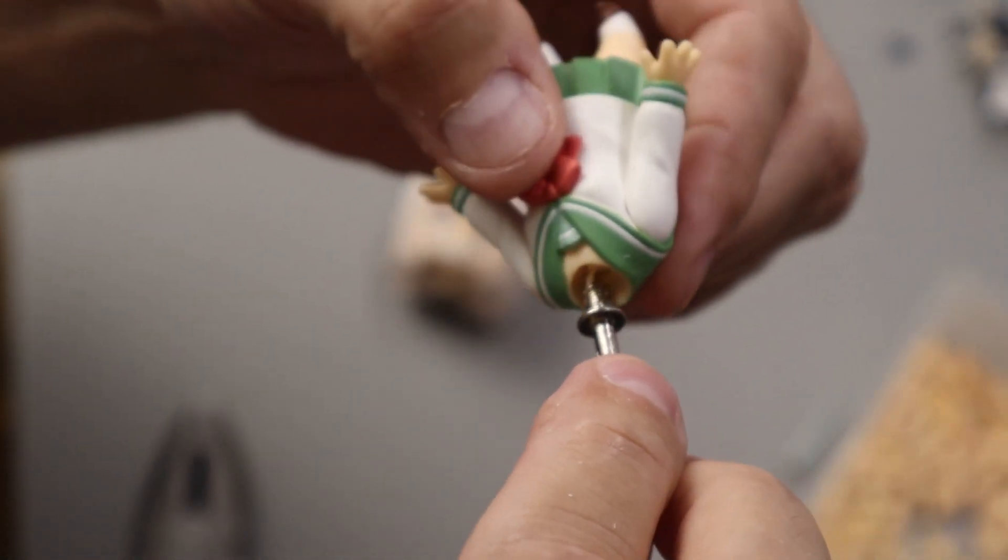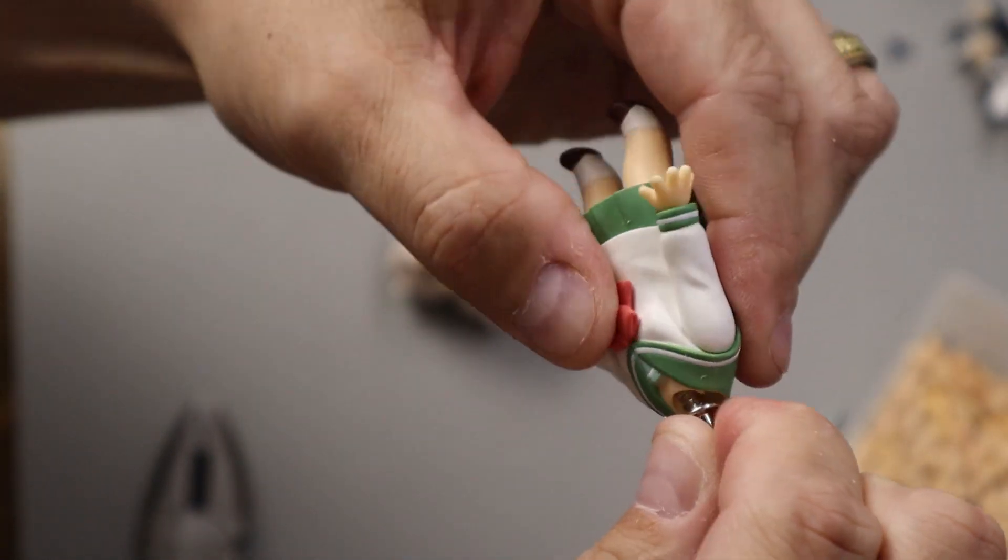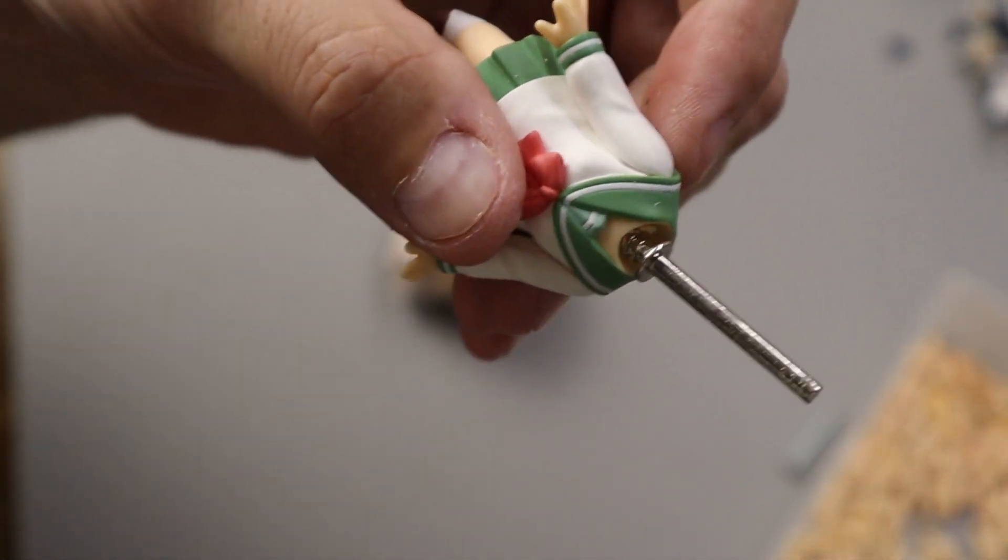Next, we grab our threaded bit, or small screw, and we thread it into the hole. Just twist it finger tight. The pliers will do the rest.